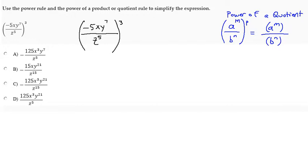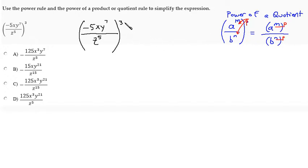The power of a quotient rule says: write the quotient with everything in the numerator given its own set of grouping symbols and everything in the denominator given its own set of grouping symbols. Then — let me do this in color — take this p, and it distributes like the distributive property, entering the numerator but also crossing over the fraction bar to the denominator. I'm suggesting that this power of 3 is this external power p.